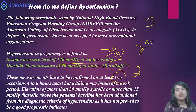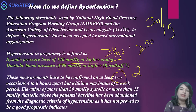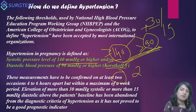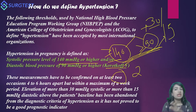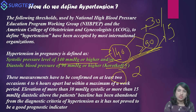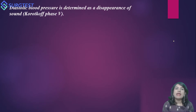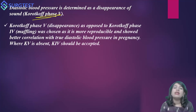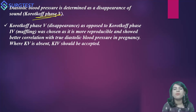Previously there was the 30-15 rule, which said that even if the systolic rises by more than 30 or the diastolic by more than 15 from the patient's baseline, it should be considered hypertension in pregnancy. However, this 30-15 rule is no longer applicable, and we have strict cutoffs of 140 and 90 to diagnose hypertension in pregnancy. The diastolic blood pressure is determined as disappearance of sound — Korotkoff phase 5 — and not Korotkoff 4.